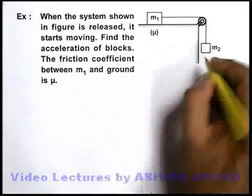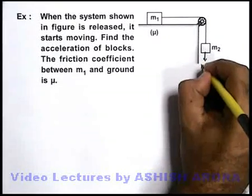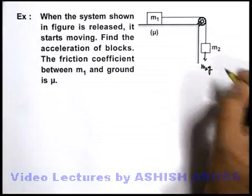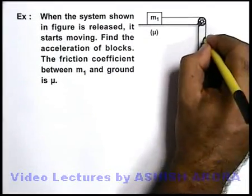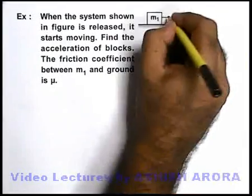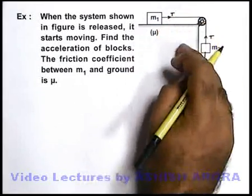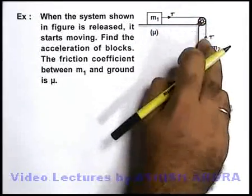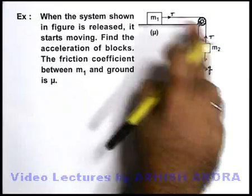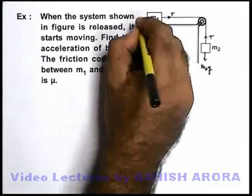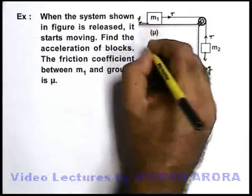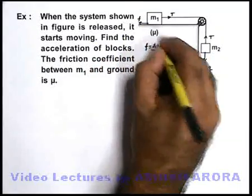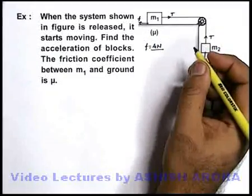Obviously when we release, this m2 will experience its weight in downward direction that is m2g. It will pull the block in downward direction. A tension is developed. Here the same tension will exist as we can consider pulley and strings to be ideal. This tension will produce a friction over here. It is given that the block starts moving, that means the value of friction is μN, and here μ must be the kinetic friction coefficient.